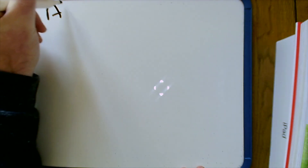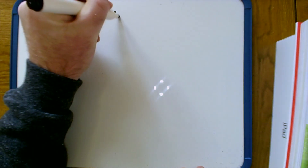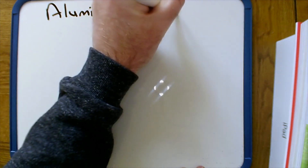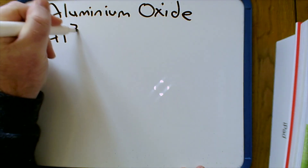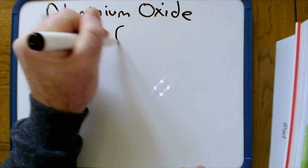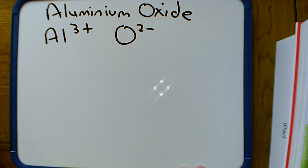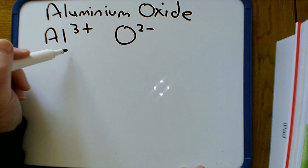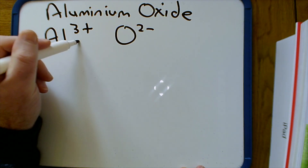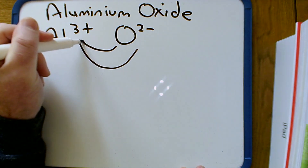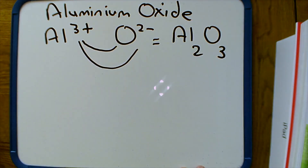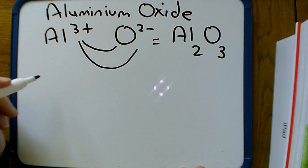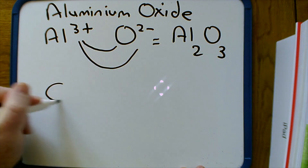For aluminium oxide: aluminium has a 3+ charge and the oxide ion has a 2− charge. Find a number that both 3 and 2 go into — that's 6. Multiply aluminium by 2 to get 6+, and multiply oxygen by 3 to get 6−, and they cancel out. Or simply swap the numbers over to get Al2O3.